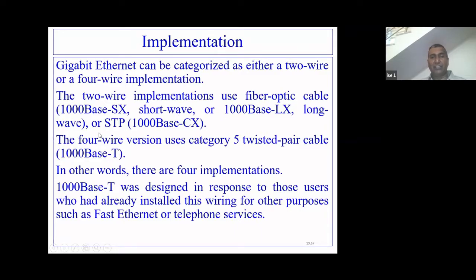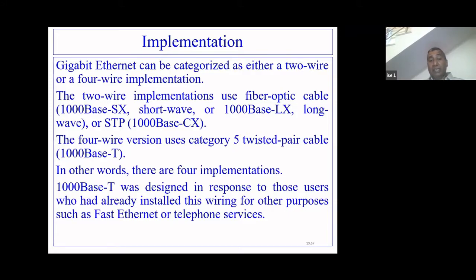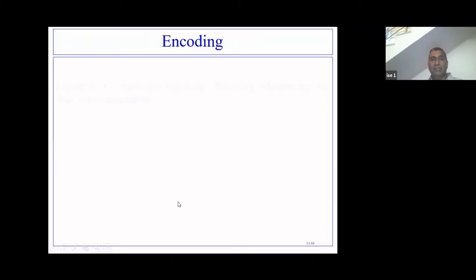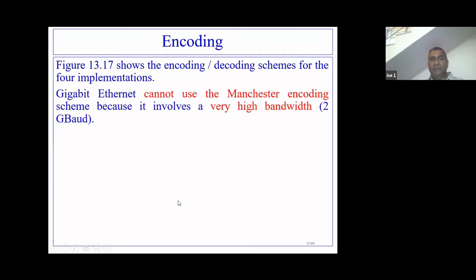There were four types of connections: 1000BASE-SX, 1000BASE-LX, 1000BASE-CX, and 1000BASE-T. These were the four physical layer implementations. 1000BASE-T was designed in response to users who had already installed Cat5 cabling for Fast Ethernet or telephone service. It was designed to support 1000 Mbps speed without changing the existing cabling.